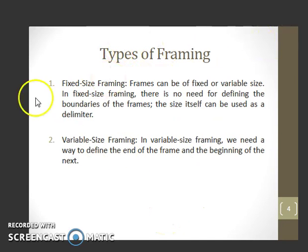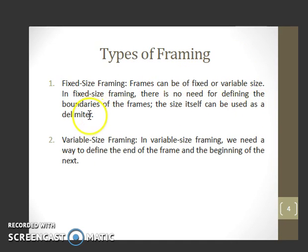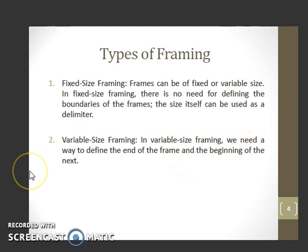There are two types of framing: fixed size framing and variable size framing. In fixed size framing, there is no need for defining the boundaries of the frames — the size itself can be used as a delimiter. In variable size framing, we need a way to define the end of the frame and the beginning of the next.